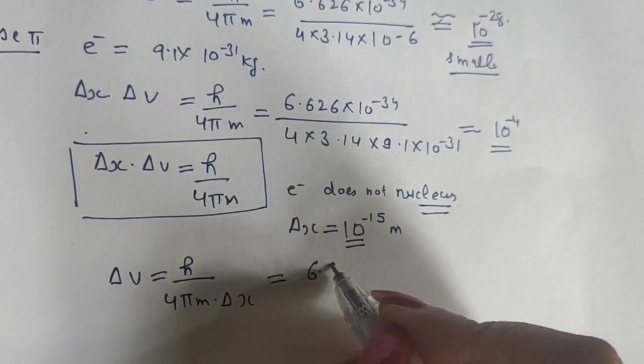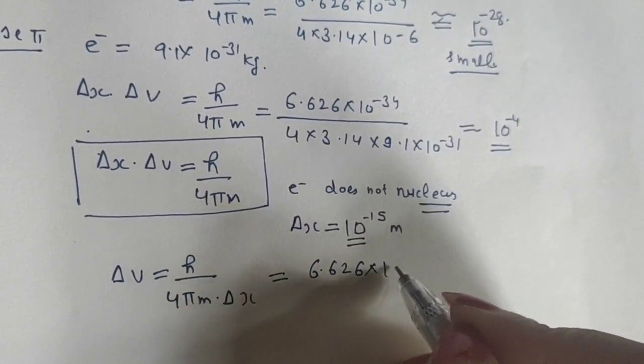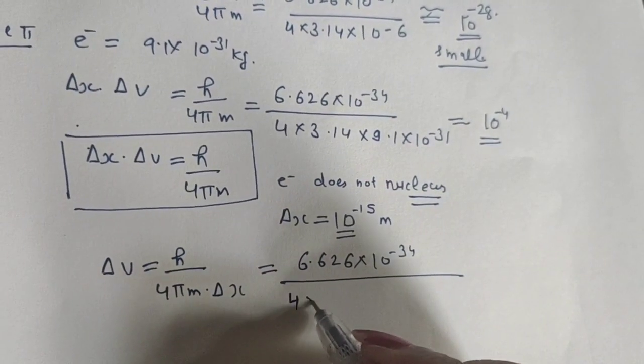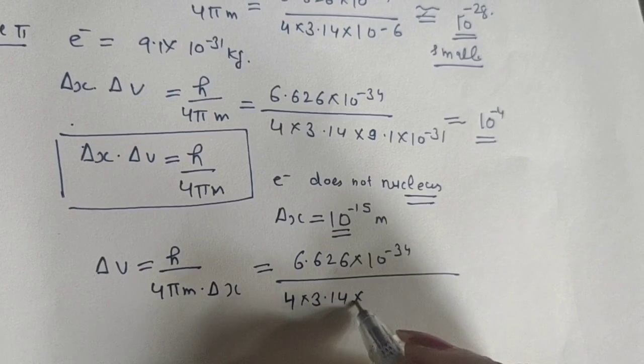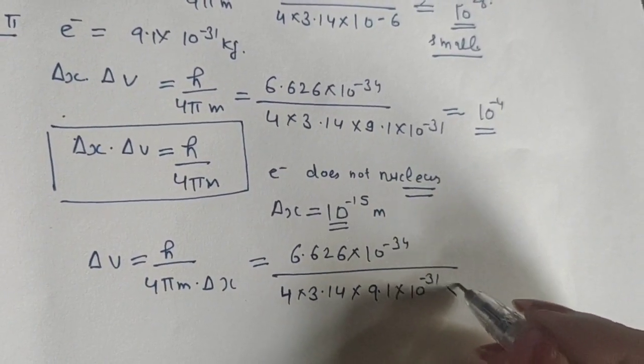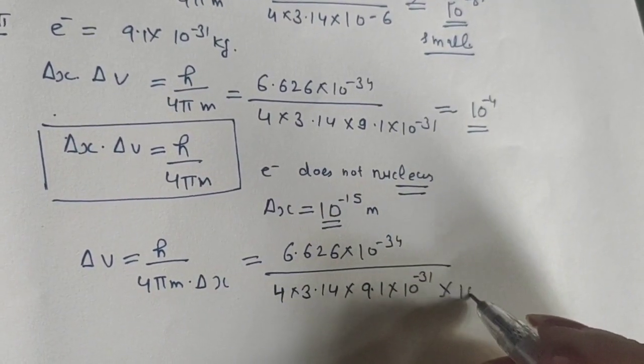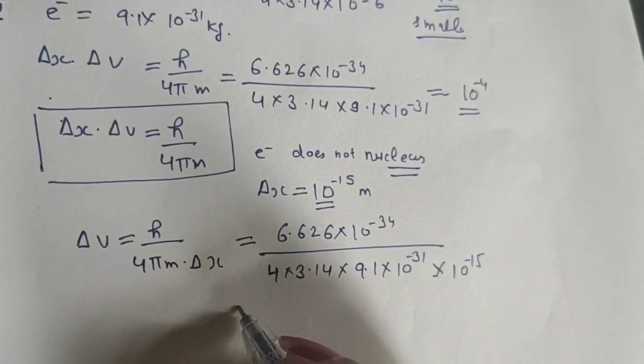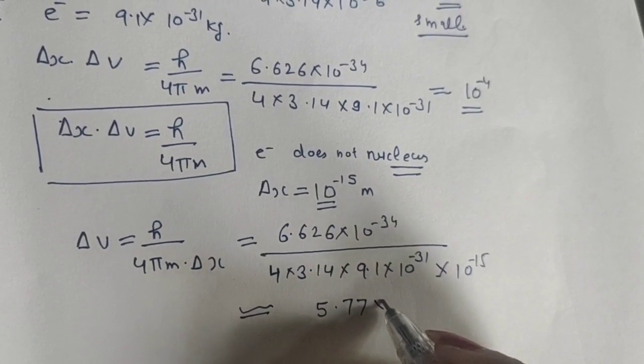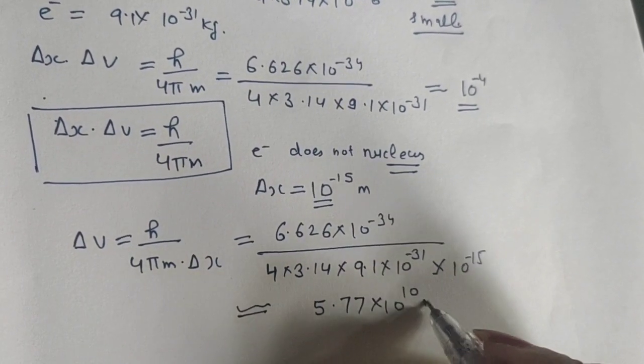Putting values: h = 6.626×10^-34, 4×3.14, mass of electron = 9.1×10^-31, and diameter of nucleus = 10^-15 m. When we solve it, Δv comes to be 5.77×10^10 m/s.